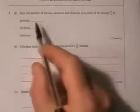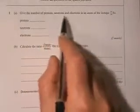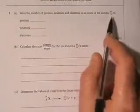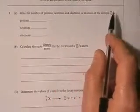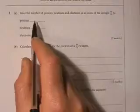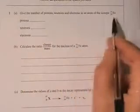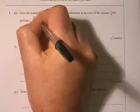A nice easy question to begin with. Give the number of protons, neutrons and electrons in an atom of the isotope iron-26-55. Well, the number of protons is easy, isn't it? The number of protons is just the proton number written there at the bottom: 26.